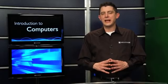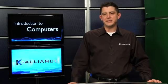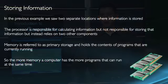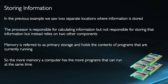Now we're going to take a look at how we store information in the PC. In our previous example, we saw that there were two different locations where information was stored. The processor is responsible for calculating information, but it's not responsible for storing that information. So instead, the processor is going to rely on two other components to retrieve the data and then to have it in a location when it's up and running.